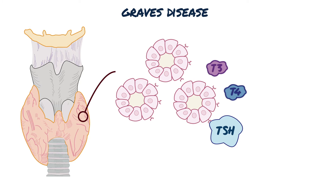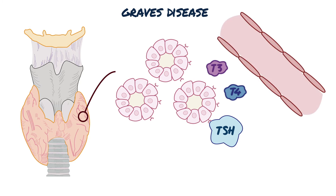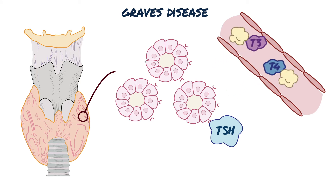Once released from the thyroid gland, these hormones enter the blood and bind to circulating plasma proteins. Only a small amount of T3 and T4 will travel unbound in the blood.